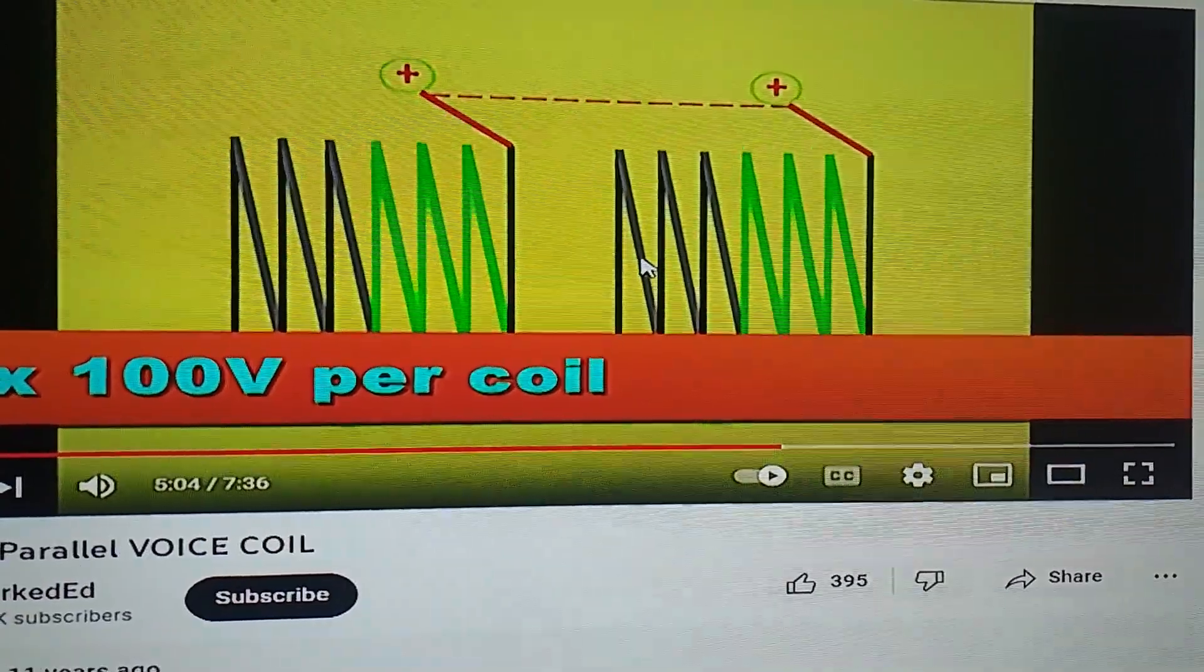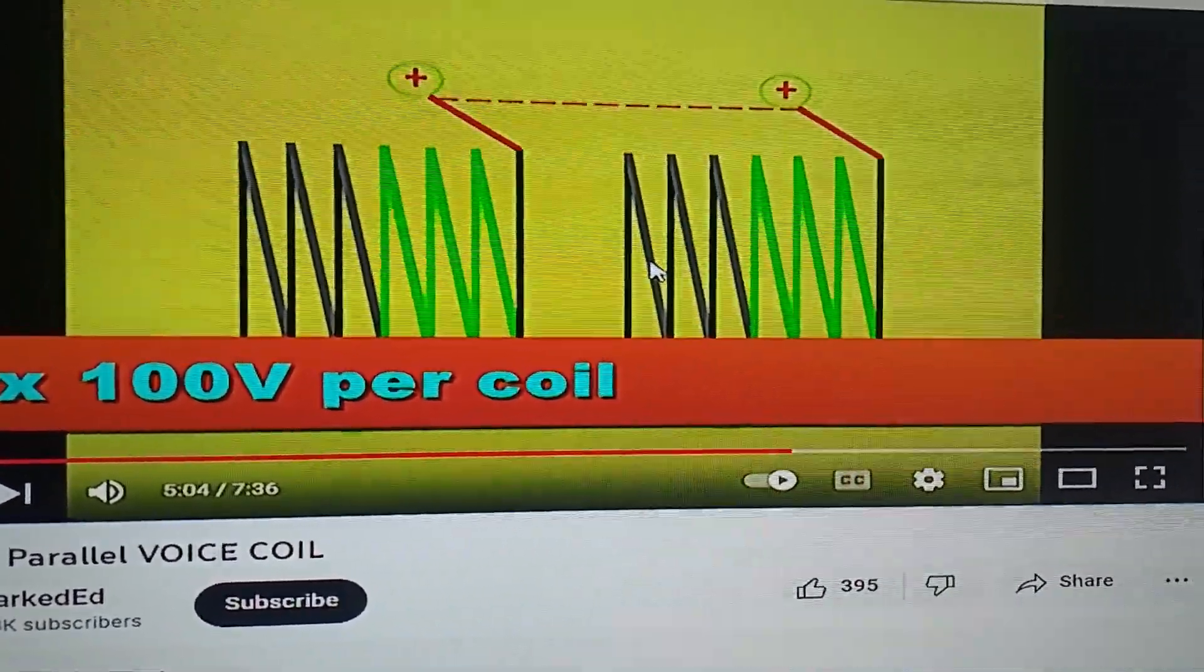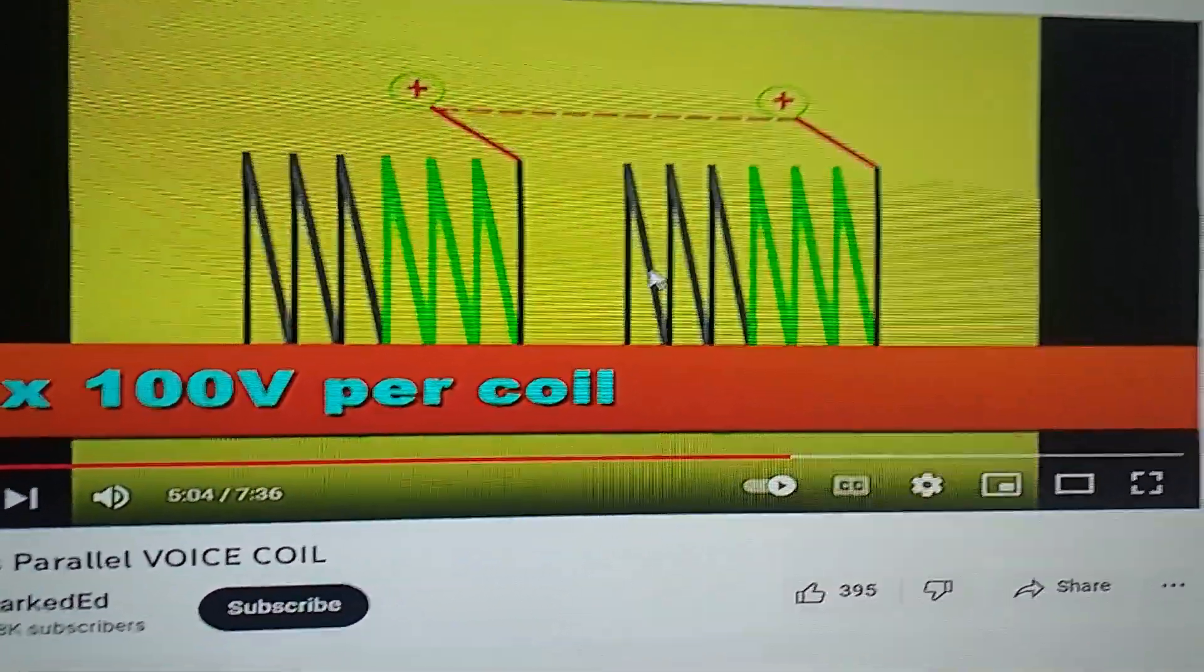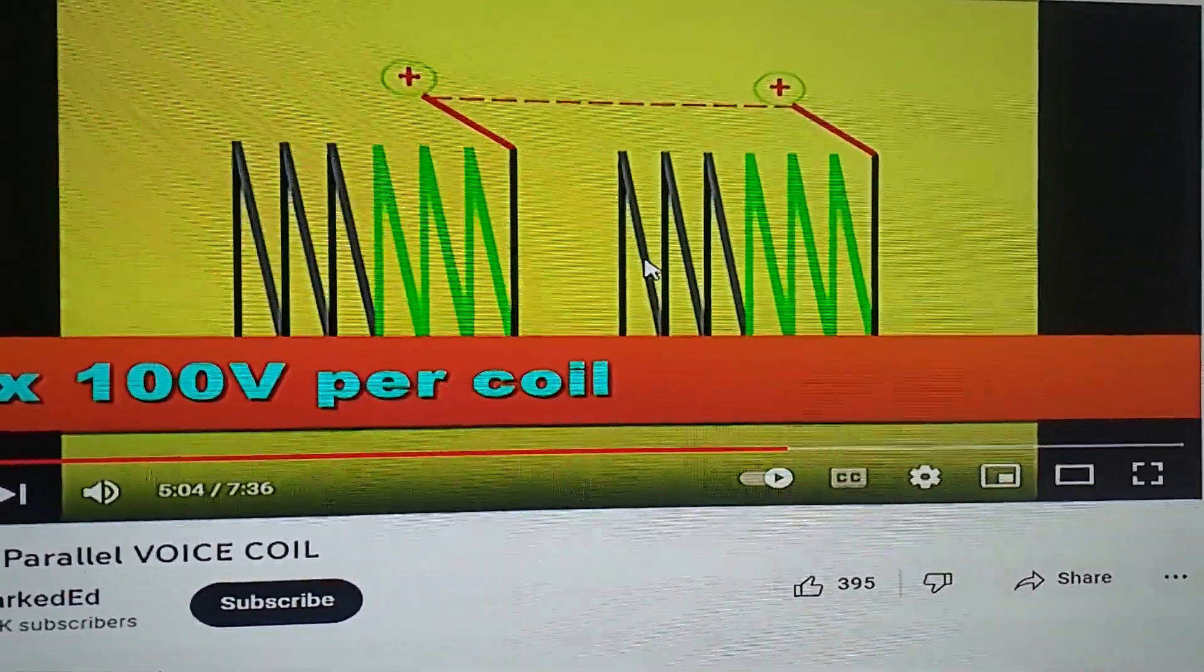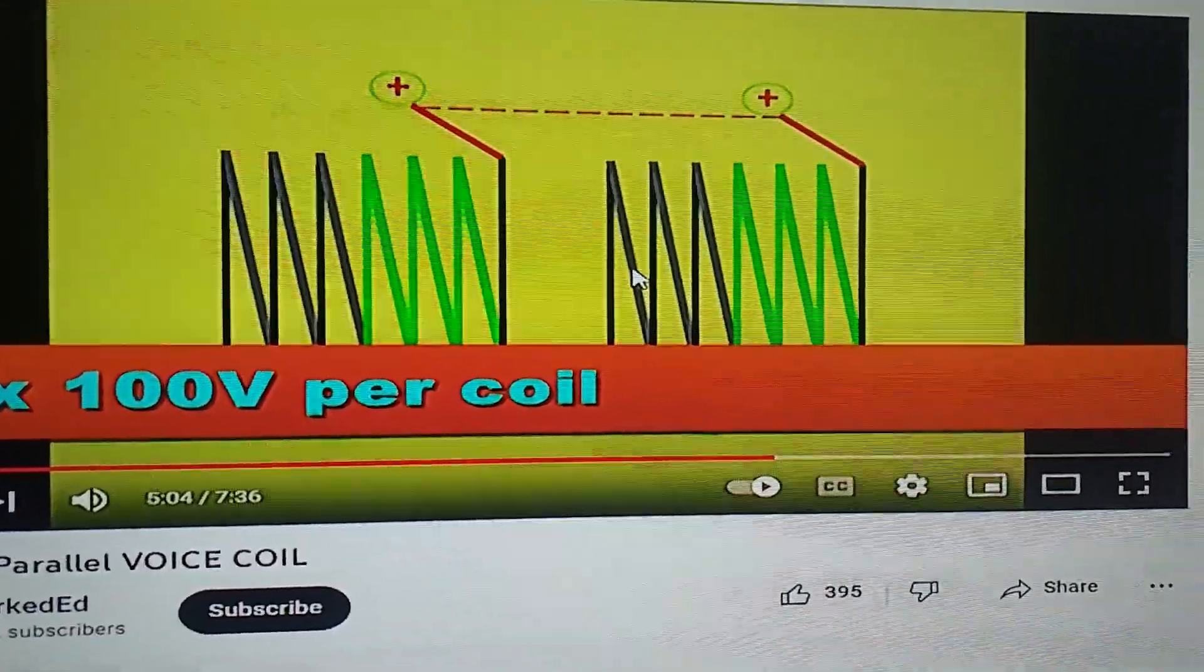How many number of turns are in the gap. If you have a dual two, let's say it's 200 windings total. If you wire it in series or in parallel, you're down to 100 windings in the gap.